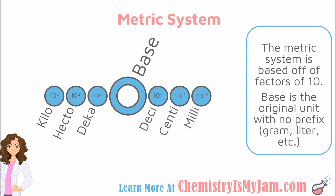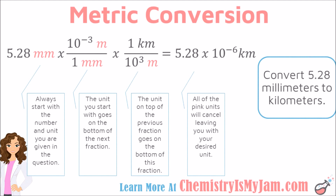Let's now go take a look at a metric conversion where we'll shift between a base and some of the prefixes. In this example, we're going to convert 5.28 millimeters to kilometers. So we're going from one end of the scale all the way to the other end of the scale. You always want to start with the number and the unit that you're given in the question. So you can see here that I've started with 5.28 millimeters.